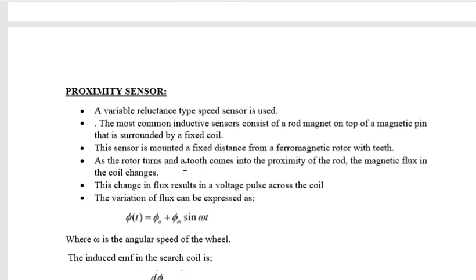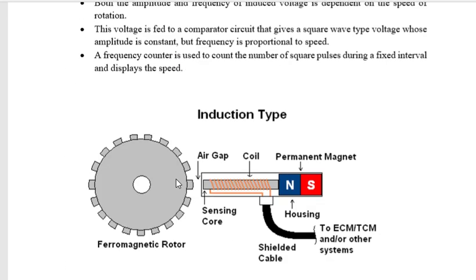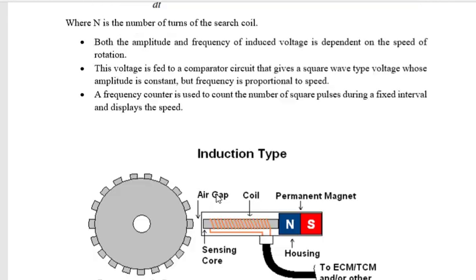As the rotor turns and a tooth comes into proximity of the rod, the magnetic flux of the coil changes. This is magnetic material, so when the teeth come into contact or in proximity—proximity means nearness to the object—with the core, the flux linking with the coil changes. There will be a change in the flux linkage.